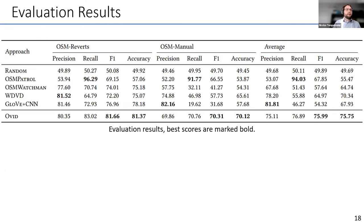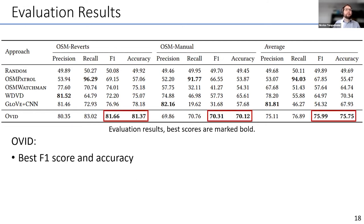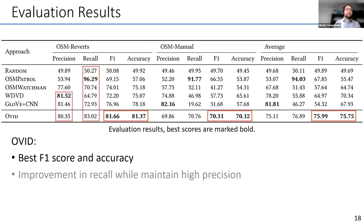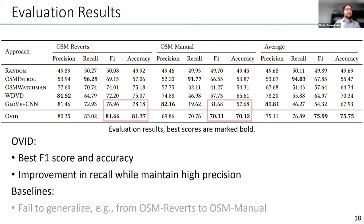Looking at the results with precision, recall, F1 score, and accuracy as metrics: we achieve the best scores in F1 and accuracy on both datasets, mainly through an improvement in recall compared to the baselines, while still achieving comparably high precision. Across datasets, our OVID model transfers best to OSM Manual — maintaining 70% accuracy compared to strong baselines that drop below 60%.